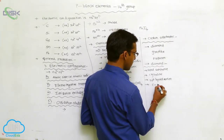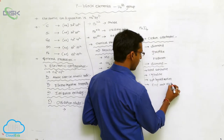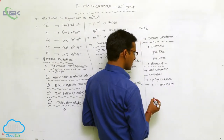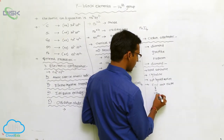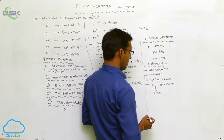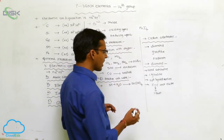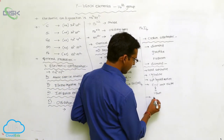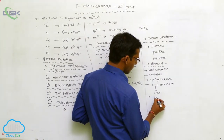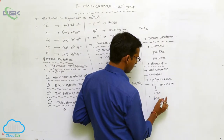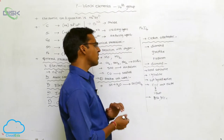The C-C bond distance in diamond is 154 pm, or 1.54 angstroms. It participates in sp3 hybridization, and its electron refractivity is 3.54 grams per cc.